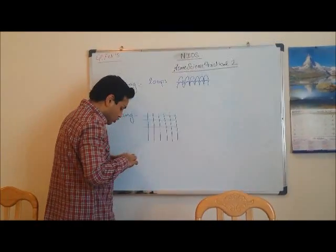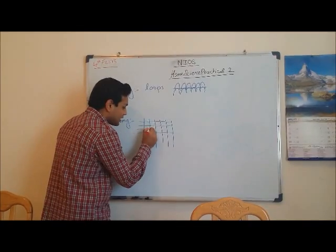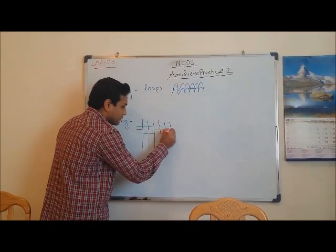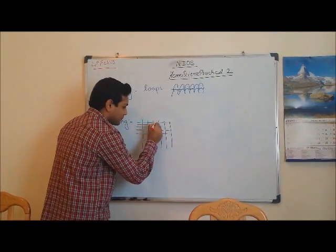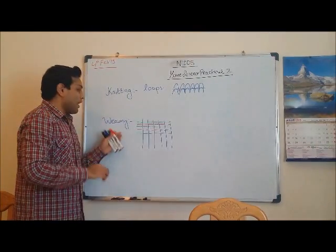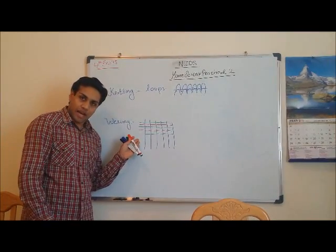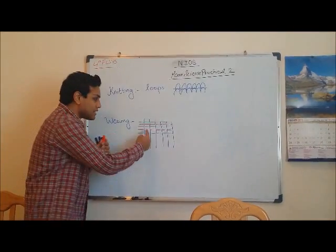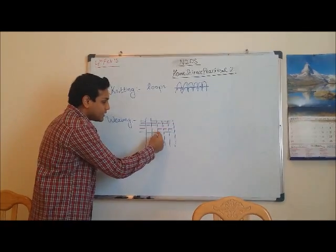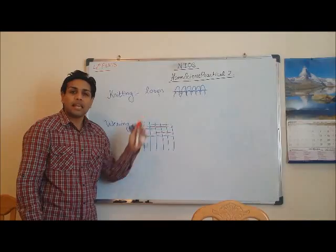For a good effect you can also use different types of colors that will represent different yarns. So weaving means interlacing of two or more sets of yarns at a 90 degree angle. This is 90 degree angles in here. While knitting is formation of loops using a single yarn.